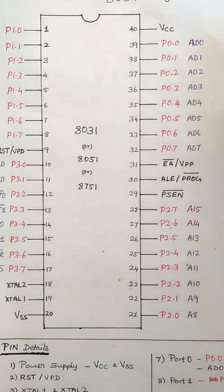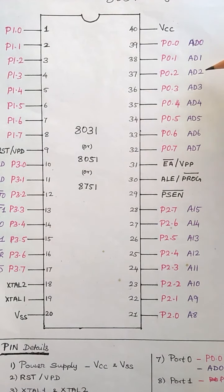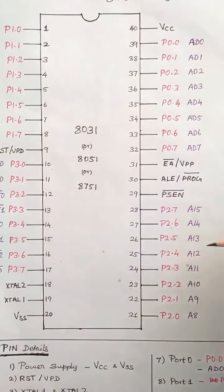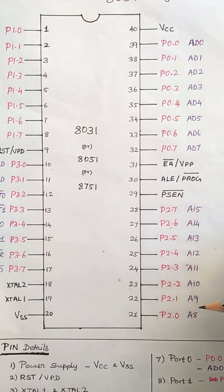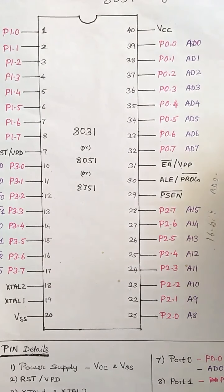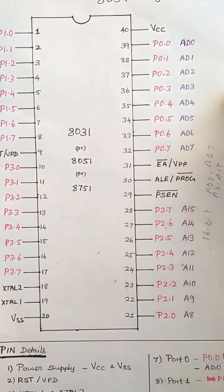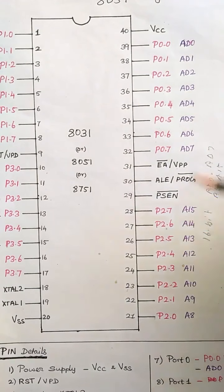Now let us recall the 8051 pin diagram. We already discussed Port 1, Port 3, Port 0, and Port 2. For external memory interfacing, Port 0 can act as an input or output line, or otherwise it acts as an address or data line of the lower byte. Similarly, Port 2 pins P2.0 to P2.7 act as the higher byte address lines A8 to A15. So totally the 8051 supports 16-bit address lines — AD0 to AD7 and A8 to A15 — obtained from Port 0 and Port 2.